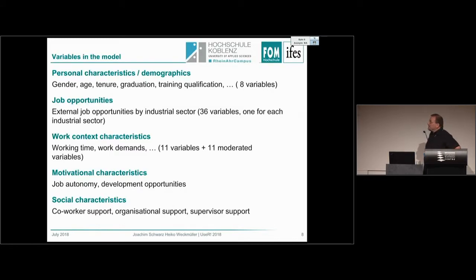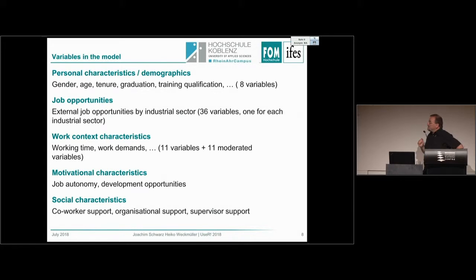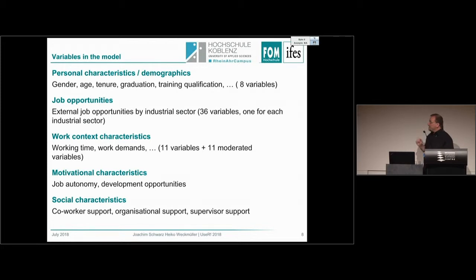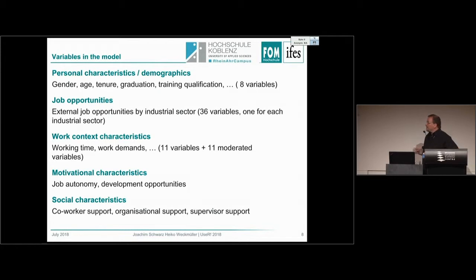Looking at the variables: personal characteristics include gender, age, tenure, graduation, and training qualification — altogether eight variables. Job opportunities are measured by open positions by industrial sector, giving another 36 variables. Work context characteristics include working time, pay satisfaction, physical demands, and emotional demands — eleven variables and another eleven moderators. Motivational characteristics include job autonomy and development opportunities. Social characteristics capture support from the organization, co-workers, and supervisors. Altogether, more than 70 variables, most of them latent, all formatively measured.